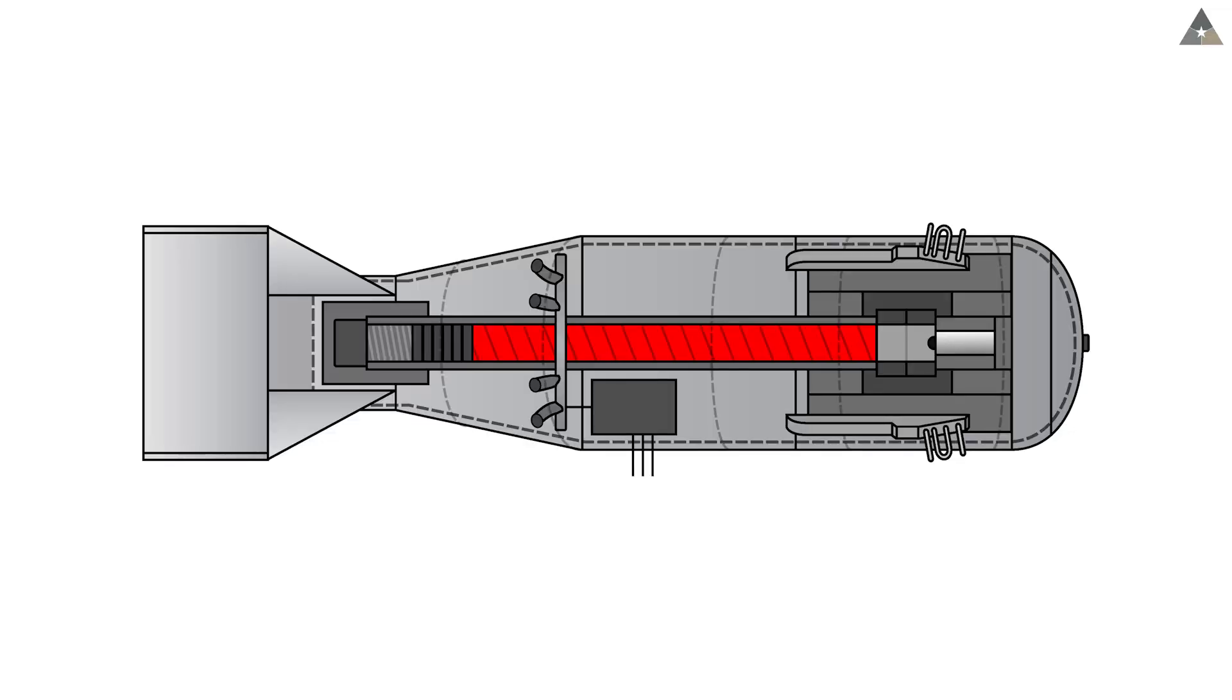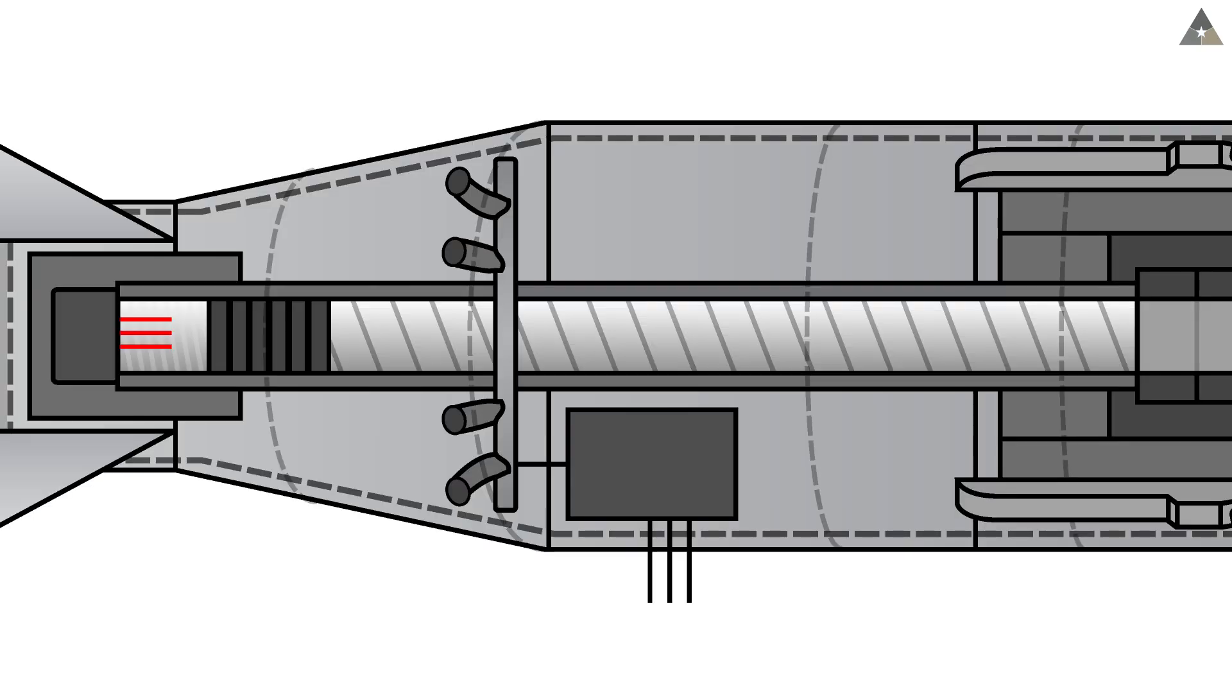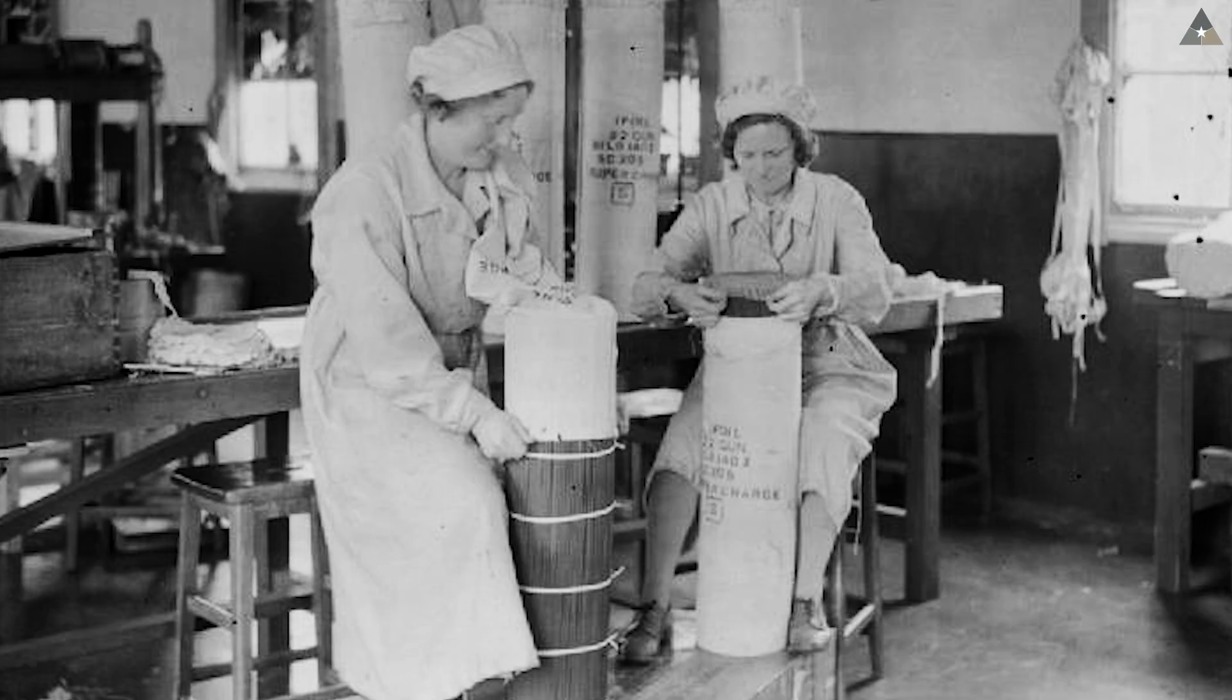On the inside of the bomb, starting at the rear and running the majority of the length is a 72-inch smoothbore barrel and was 6.5 inches in diameter. At one end of the barrel there would be three electric primers which, when set off, would ignite four 2-pound cordite silk bags.